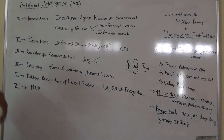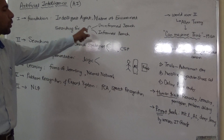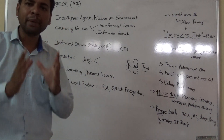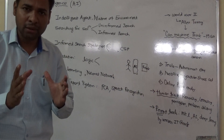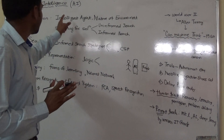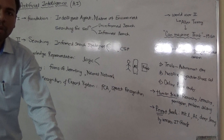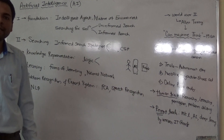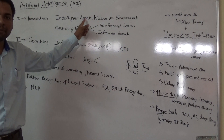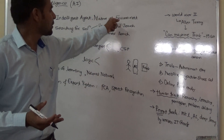In unit one we are going to learn key concepts such as intelligent agents, the nature of the environment, and searching for solutions. An intelligent agent means you want to build or design a machine or robot that can think like a human being. We will study what types of intelligent agents there are, how to design them, and what kind of environment they face — whether it is fully observable or partially observable.